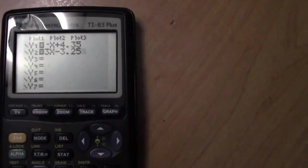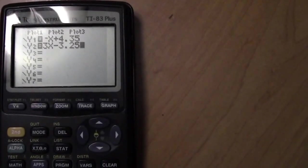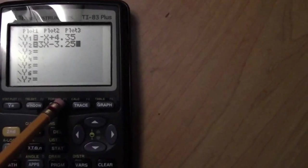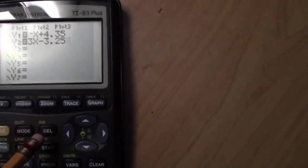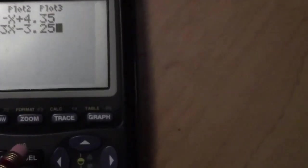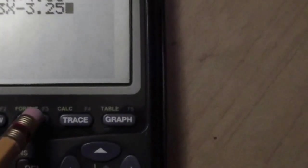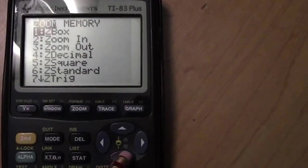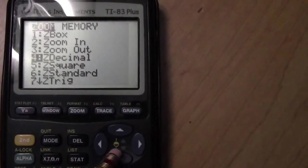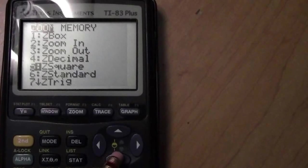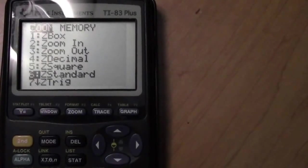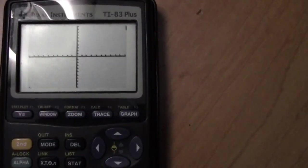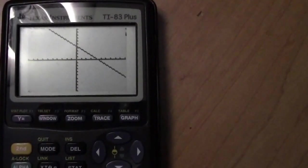In order to see it on your graphing calculator, you need to press zoom, which is found in the center of your top row. And then go down to option 6. That's the standard. Press enter, and you'll get a graph.